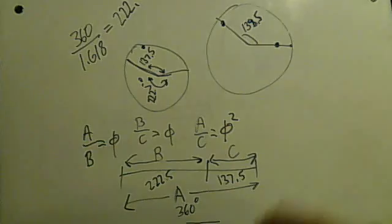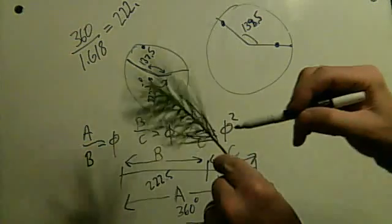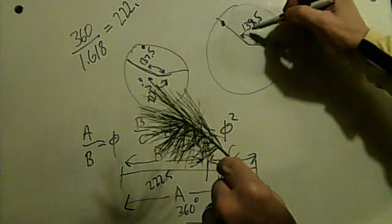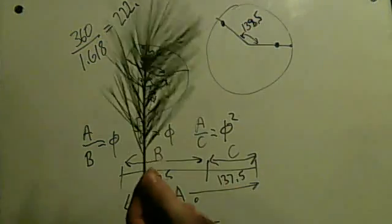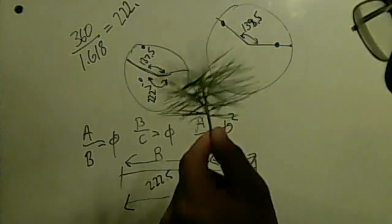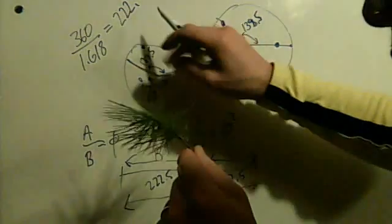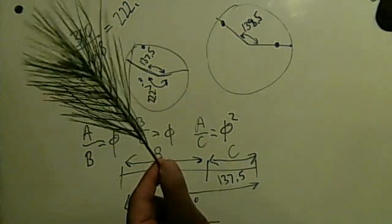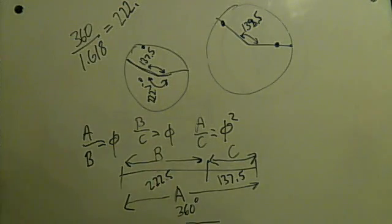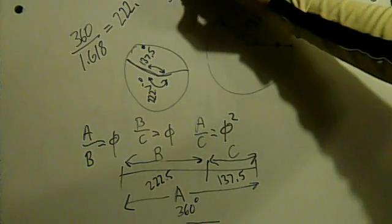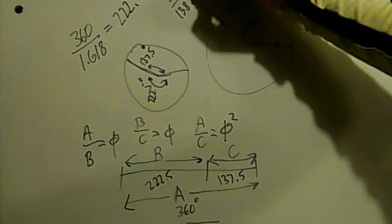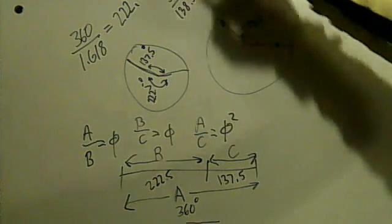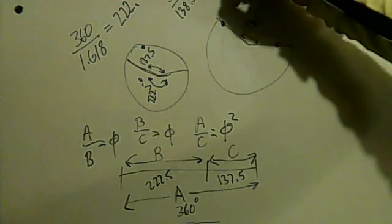What we found in this pine branch was an angle of 138.5 degrees. It was off by one degree, but I wasn't measuring it accurately. It could very easily be 137.5. That's what makes the ratio of 360 degrees to 138.5 about 2.6, because that's phi squared.